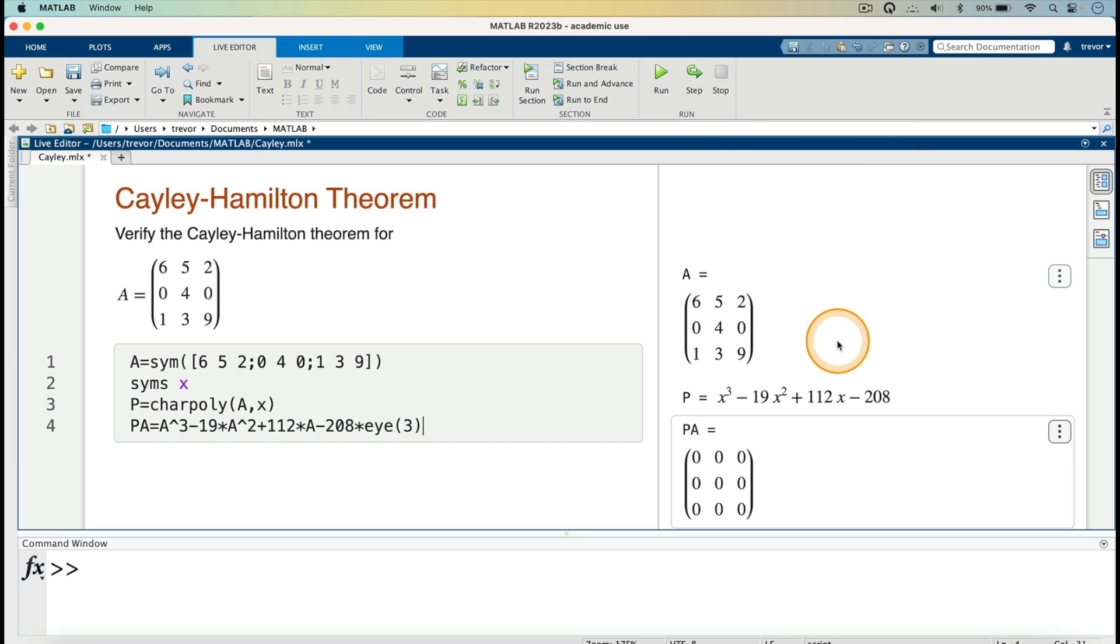And it gives us our PA as the zero matrix there, as expected, because the Cayley-Hamilton theorem states that every matrix satisfies its own characteristic polynomial. That is to say, if we substitute the matrix into its characteristic polynomial, we get the zero matrix.